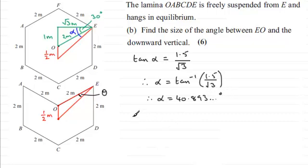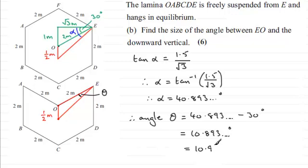So, therefore, the angle that we want is theta, and theta is equal to alpha, 40.893 and so on, take away 30 degrees. And working that out gives us 10.893 and so on degrees, and if we give this to three significant figures, it's going to be 10.9 degrees to three significant figures.